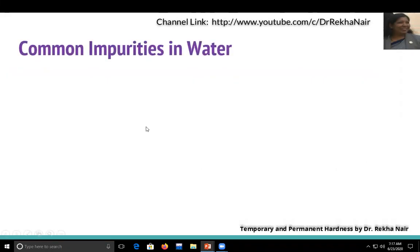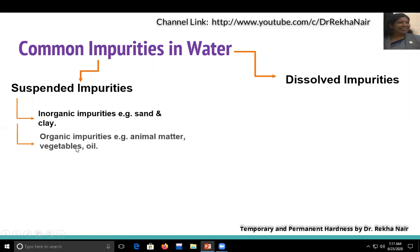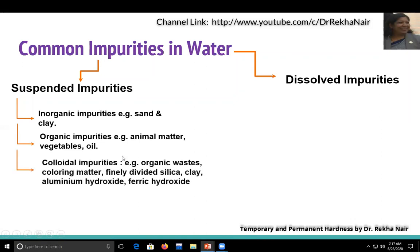Let us discuss what are the common impurities present in water. There can be two types of impurities: suspended impurities and dissolved impurities. For suspended impurities, we have inorganic impurities like sand and clay, organic impurities like animal matter, vegetables, and oils. We also have colloidal impurities like organic waste, coloring matter, finely divided silica (SiO₂), clay, and aluminum hydroxide.